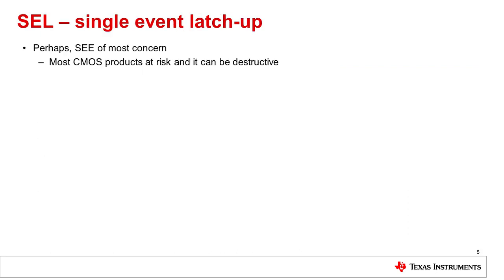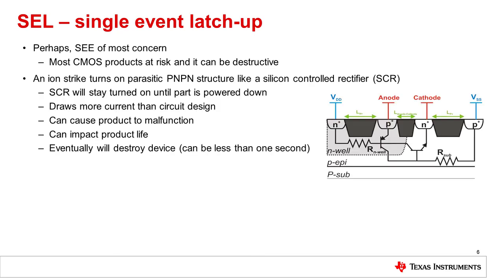Perhaps the radiation effect of most concern to designers is single event latchup. Most CMOS products are at risk and this event can be destructive. Most CMOS products have parasitic PNPN structures in the middle of the circuit that can act like a silicon controlled rectifier, or SCR.